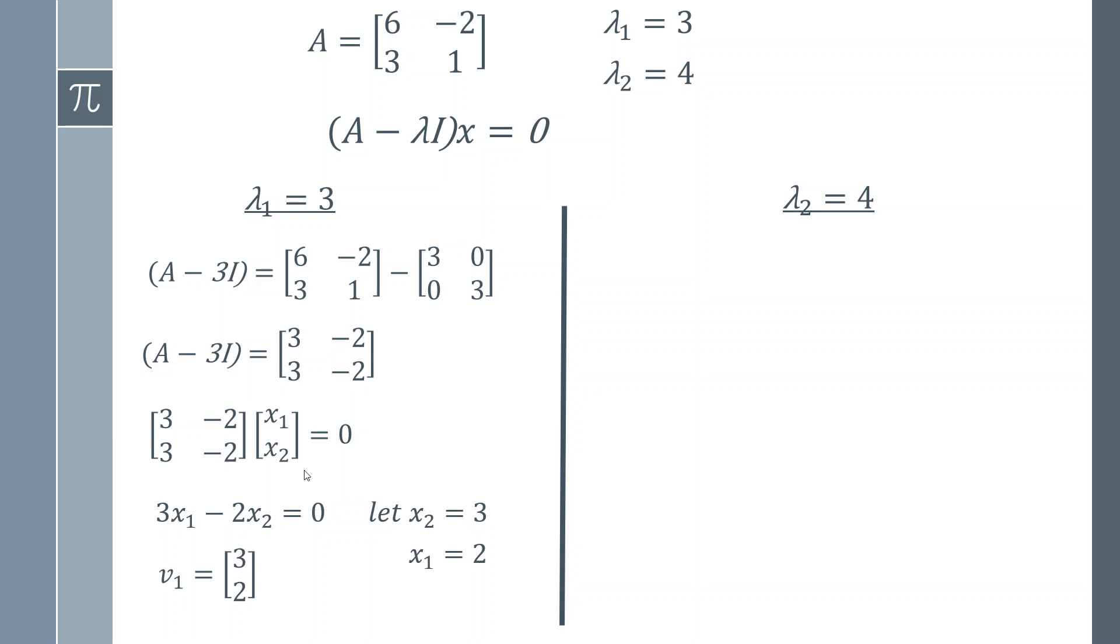We then do the same thing for lambda 2 equals 4. So instead of doing 3I, we're doing 4I. Simply complete that subtraction. You get a matrix. We're going to multiply that by x1, x2. That's going to be our holding place for an example eigenvector. And in this case, we get two different equations.